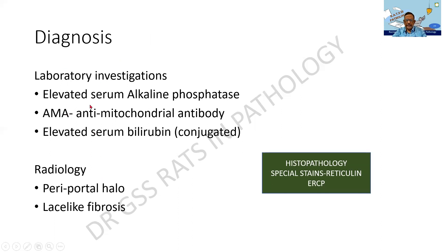Laboratory investigations include elevation of serum alkaline phosphatase, antimitochondrial antibodies, and elevated serum bilirubin — conjugated, as it is a type of obstructive jaundice. Radiologically, there is a periportal halo due to periportal inflammation and fibrosis causing contraction, producing a clear space around the inflammation, as well as lace-like fibrosis. Radiology is also diagnosing early stages of cirrhosis. Histopathologically, special stains such as reticulin can be done. ERCP (endoscopic retrograde cholangiopancreatography) can also be performed to identify any form of obstruction.